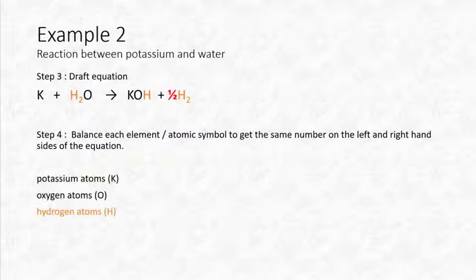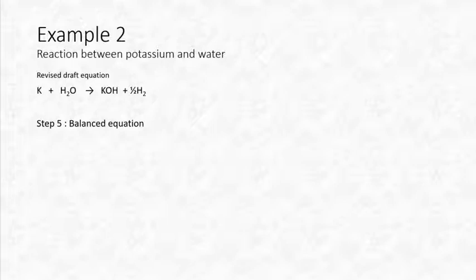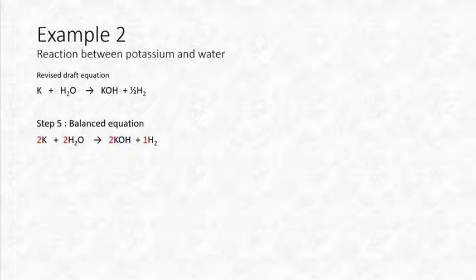To fix this, we put a half in front of H₂, giving only one hydrogen atom from that molecule. The revised equation becomes: K + H₂O → KOH + ½H₂. But having a half of a molecule is not good practice, so we double everything — as long as we do it to all molecules on both sides. We end up with: 2K + 2H₂O → 2KOH + H₂ (the coefficient 1 in front of H₂ is not written).